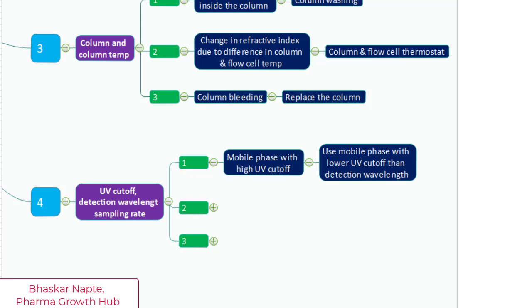For example, if you measure the UV cutoff of your mobile phase and it is found to be 210 nanometers, you can use this mobile phase with a detection wavelength greater than 210 nanometers. For example, if the detection wavelength is 220 nanometers or 230 nanometers, then the mobile phase with UV cutoff of 210 nanometers is well acceptable.